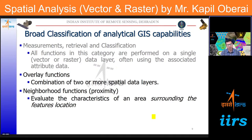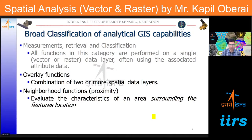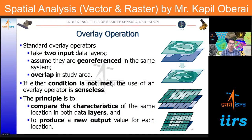Moving to the classification of analysis capabilities: one way is to classify purely based on data model — raster or vector. We can also classify operations as measurement, retrieval, or classification. In this session, I will focus on the overlay function — combining two or more spatial layers — which can be done in vector or raster domain — and also the neighborhood or proximity function, where we examine the characteristics of a spatial feature and the area surrounding it.